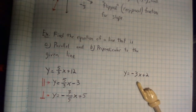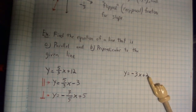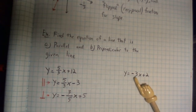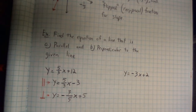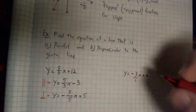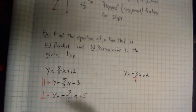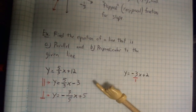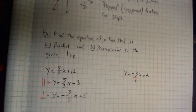There's a practice problem for you to try. One thing to take notice of is that I have a whole number. Anytime I see a whole number, I'm going to put it over 1 so it's easier when I start doing my perpendicular — I'll know what the flipped or reciprocal fraction should look like. Take a second to pause this and try it on your own, then come back and check out the answer.